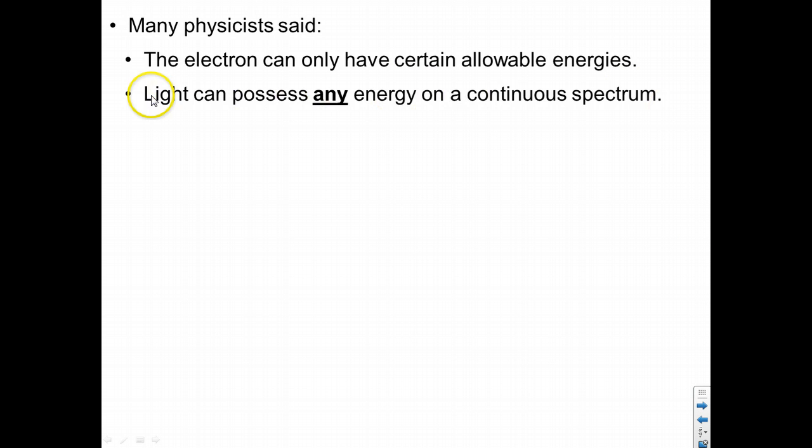Many physicists believed that the electron can only have certain allowable energy levels, like Bohr stated. But they thought that light could possess any energy level on a continuous spectrum.